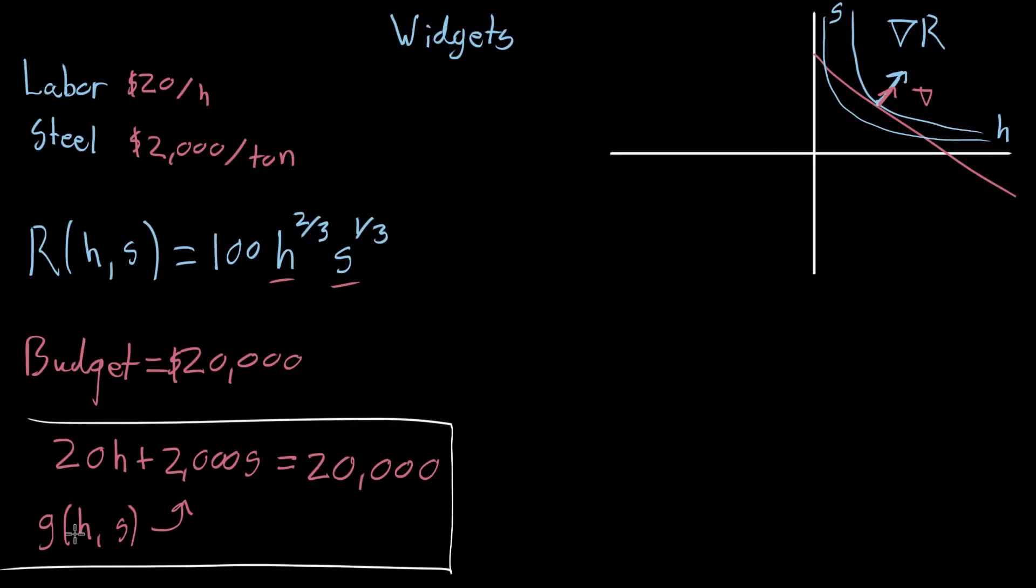The gradient of our r function, the function whose contours this is, the revenue. And what it means for this to be tangent to the constraint line is that there's gonna be another vector, the gradient of g, of our constraint function, that points in the same direction, that's proportional to that. And typically the way you write this is to say that the gradient of this function is proportional to the gradient of g. And this proportionality constant is called our Lagrange multiplier, it's called the Lagrange multiplier.